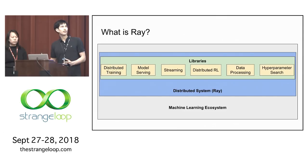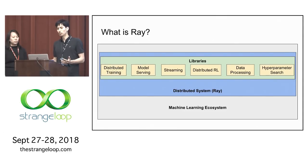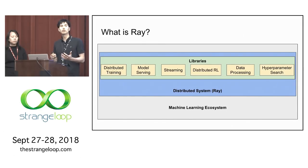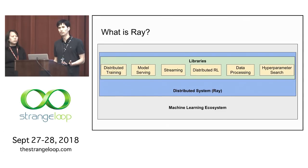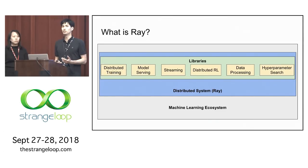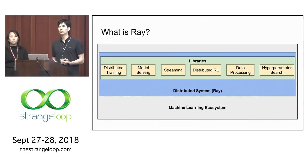Ray is the underlying distributed system, and it also hosts a number of libraries on top that support the different components of the machine learning ecosystem. This list is by no means exhaustive, but these are examples of standard components that appear over and over in many machine learning applications.